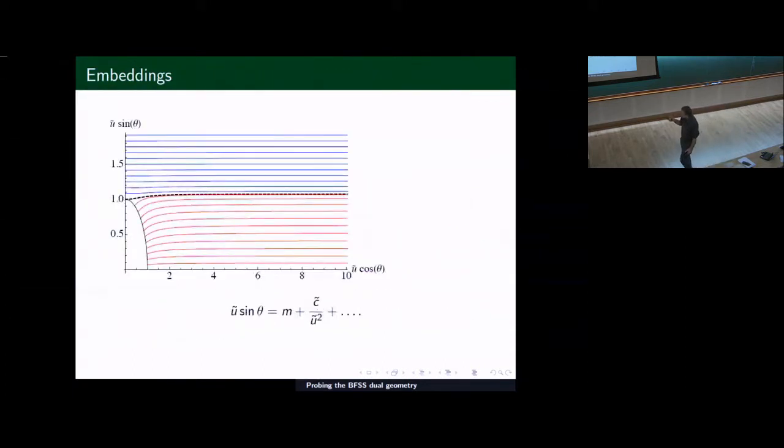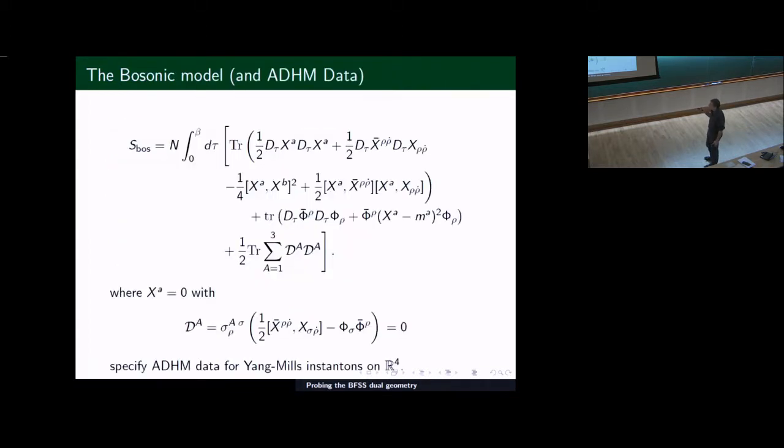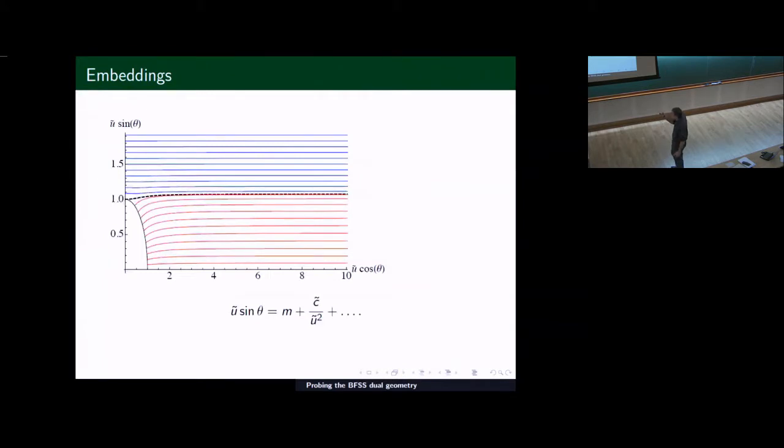So we have different options. We could embed it way off at infinity, away from the black hole. Or we can bring it in. It's an infinite D4 brane. It can drop into the black hole and continue out to infinity. One expects that there's an additional phase transition in the system as one goes through this. One can derive an analytic expression for what this embedding is.